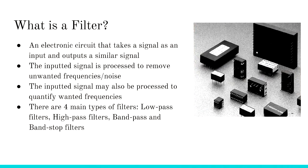What is a filter? An electronic circuit that takes a signal as an input and outputs a similar signal. The inputted signal is processed to remove unwanted frequencies, also known as noise. The inputted signal may also be processed to quantify wanted frequencies. There are four main types of filters: low pass, high pass, band pass, and band stop.